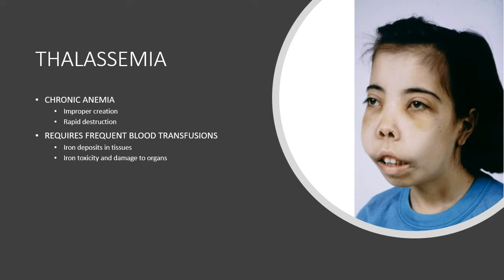The child with thalassemia major presents with pallor, hypoxia, poor appetite, fever, jaundice, and bronze skin coloration called hemosiderosis — where rapid red blood cell breakdown causes iron to stain the skin. The liver and spleen become enlarged, causing abdominal distension and pressure on chest organs. There is also massive bone marrow space enlargement which changes the facial contour, giving a classic facial appearance. The child can also develop heart failure. These patients are treated with frequent blood transfusions, which results in iron deposits in tissues.